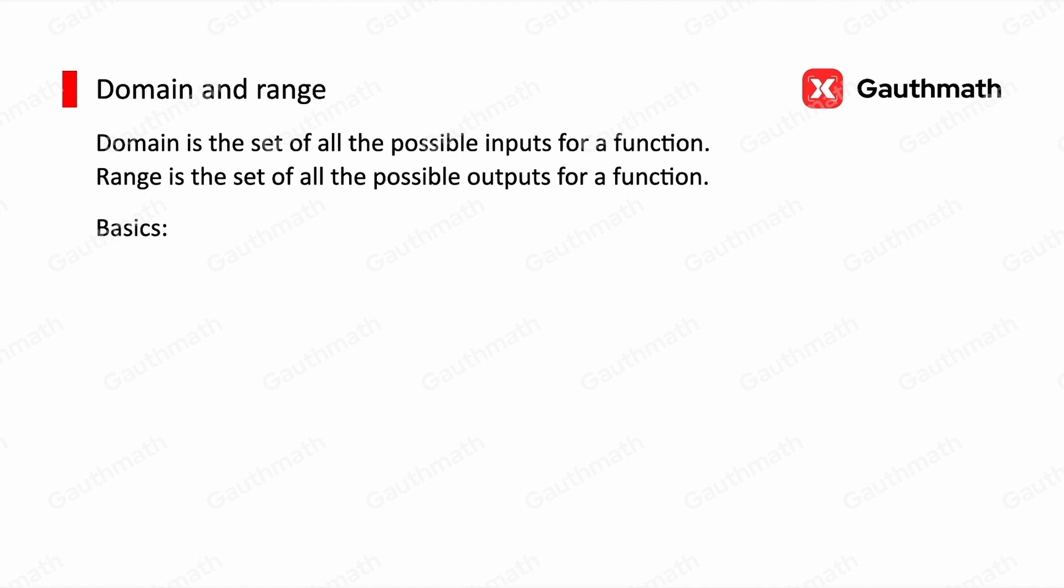There are three basic domain rules to remember. The first one: the radicand of a radical function is greater than or equal to zero. For example, if we have f(x) = √(3x - 1), the domain is 3x - 1 ≥ 0.